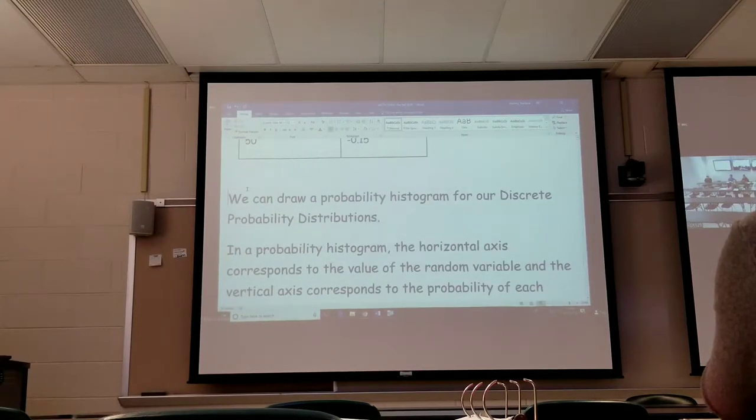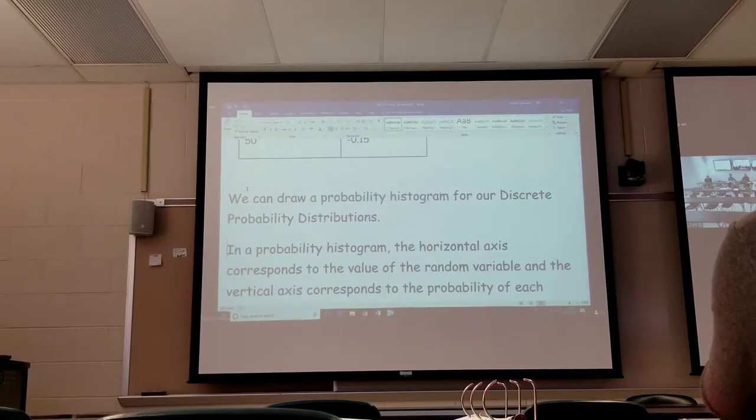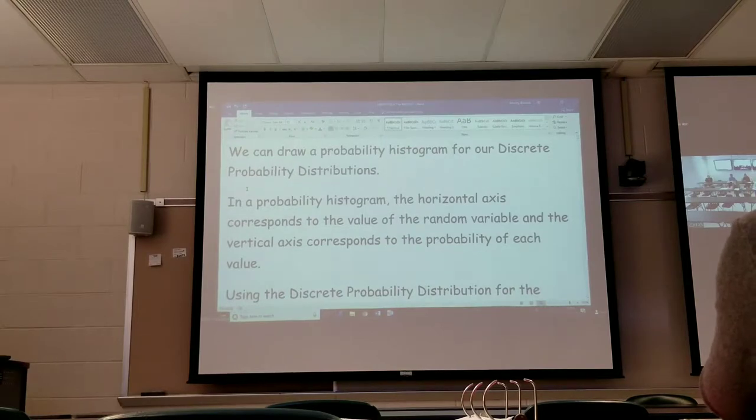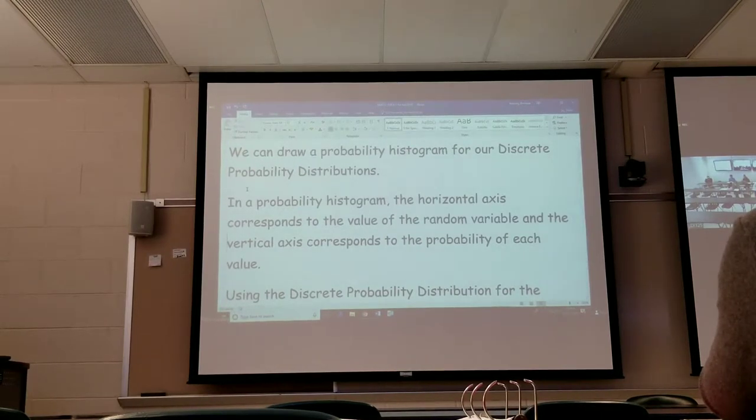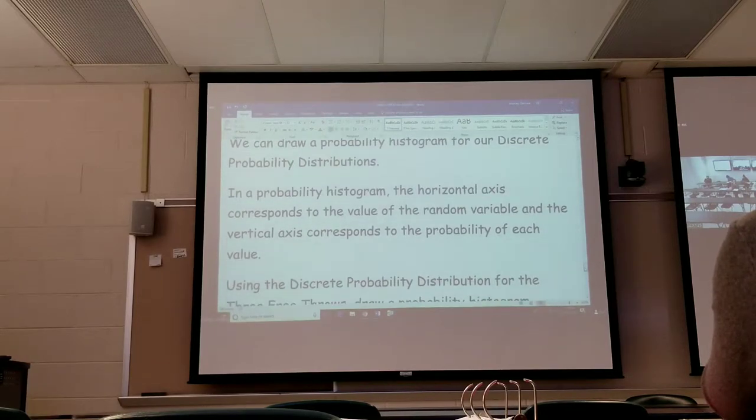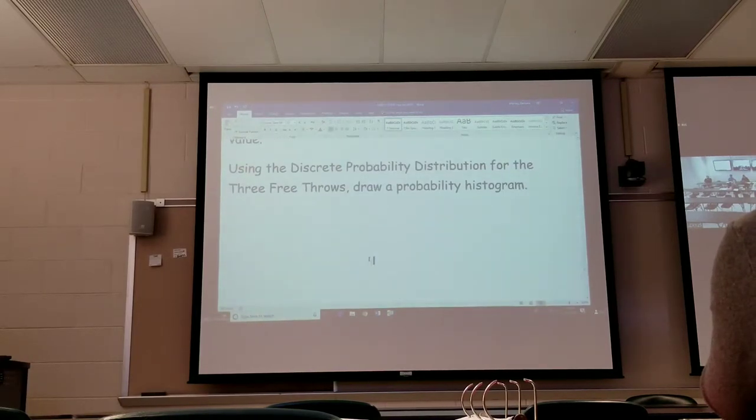We can draw probability histogram distributions. In a probability histogram, the horizontal axis corresponds to the value of a random variable and the vertical axis is a probability. It's a relative frequency histogram from chapter two. These are the discrete probability for free throws.